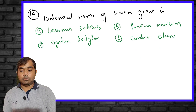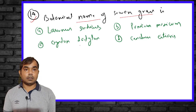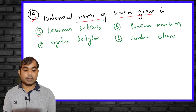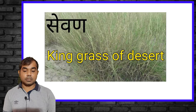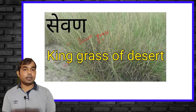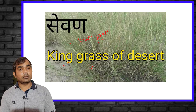The fourteenth MCQ asks: what is the botanical name of sema grass? Options are Lasiurus sindicus, Panicum maximum, Cenchrus ciliaris, and Cynodon dactylon. The right answer is Lasiurus sindicus. Sema grass is mainly found in Rajasthan and is known as the king grass of the desert because it grows very well in arid areas.